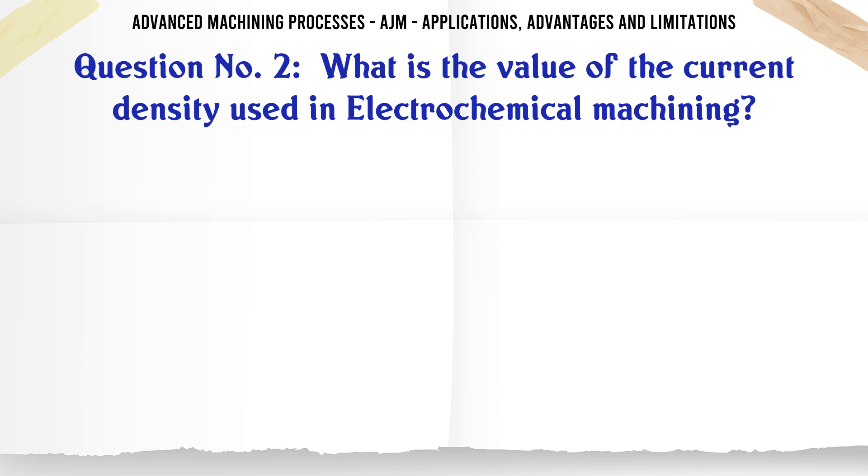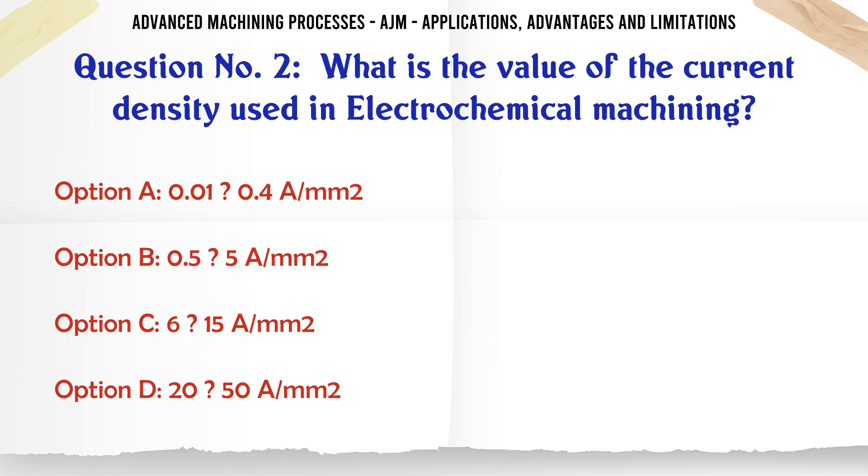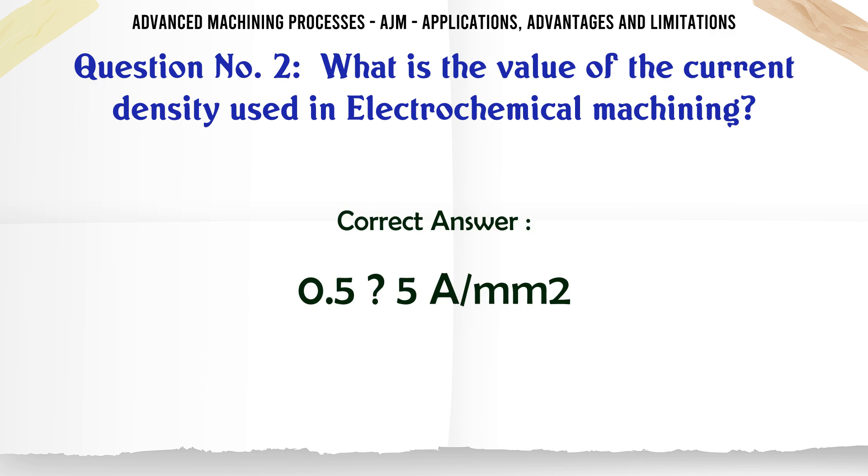What is the value of the current density used in electrochemical machining? Option A: 0.01 to 0.4 A/mm². Option B: 0.5 to 5 A/mm². Option C: 6 to 15 A/mm². Option D: 20 to 50 A/mm². The correct answer is 0.5 to 5 A/mm².